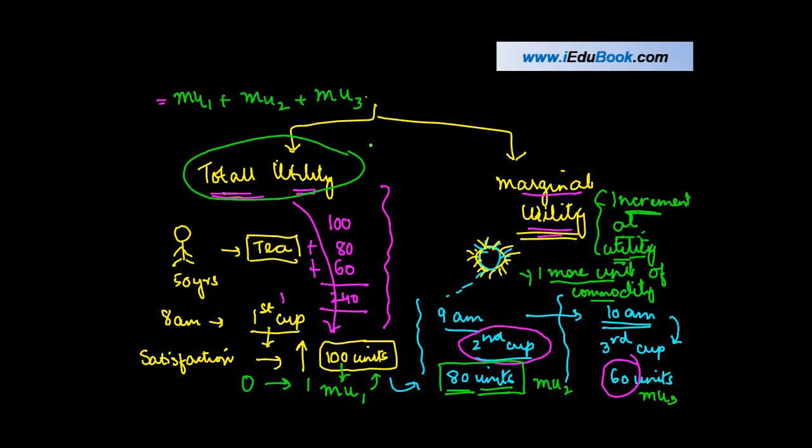We also saw what is the meaning of total and marginal utility. Total utility: the sum total of utility derived by consumption of various commodities. Marginal utility: the incremental utility derived from consumption of one more unit, plus one.